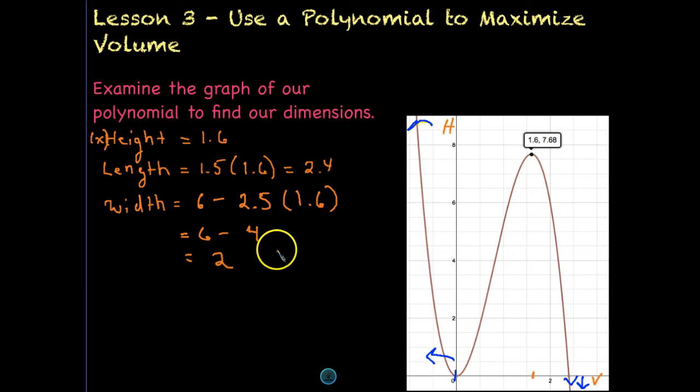So now we know the dimensions of our tea box. Our height will be 1.6. Our length will be 2.4. And our width will be 2. And those are the dimensions based on the constraints that we need in order to maximize a volume of 7.68.